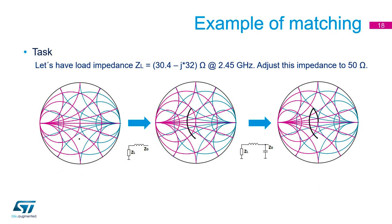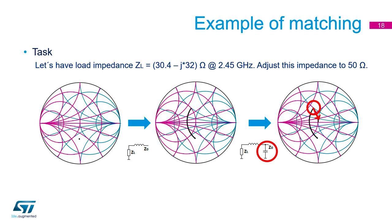Here is an example of a simple matching procedure. We have load impedance ZL of 30.4 minus J32 Ohms at 2.45 GHz, and we want to adjust this impedance to 50 Ohm. First, we mark the load impedance in the Smith chart. The impedance has its real and imaginary part — you find them as the intersection of the appropriate circle and curve. We need to get from this point to the circle of constant conductance, which is possible by connecting a serial inductor, moving along the circle of constant resistance. Then we need to get to the middle of the Smith chart by moving along the circle of constant conductance, so a parallel capacitor needs to be connected. Of course, it is matched only at this point — on other nearby frequencies the matching result is slightly worse.